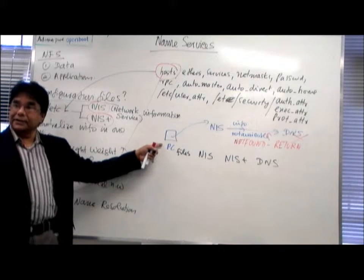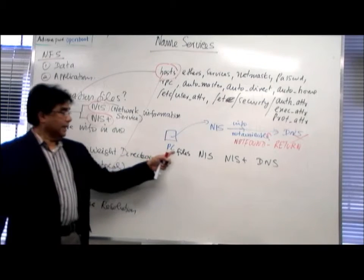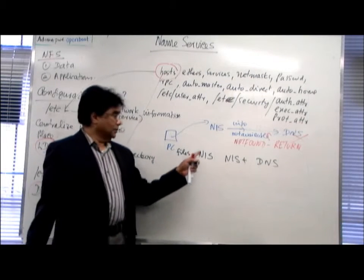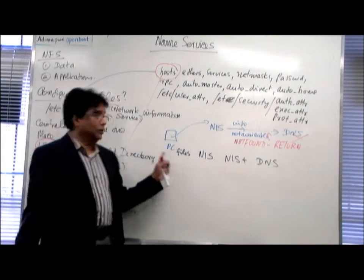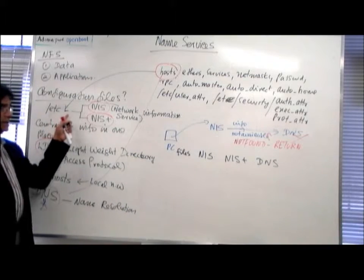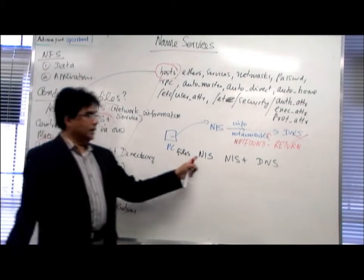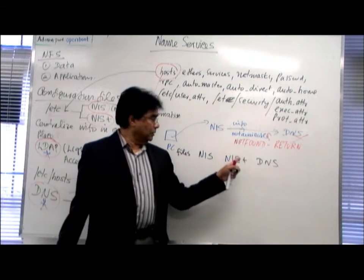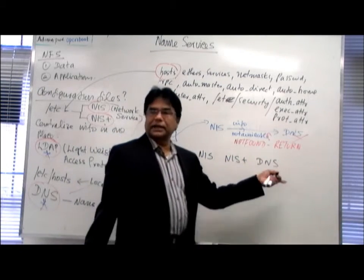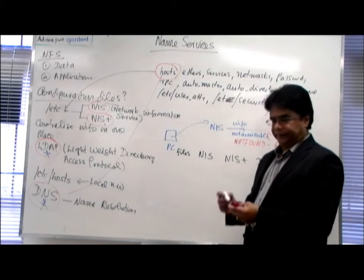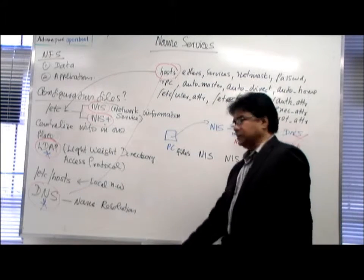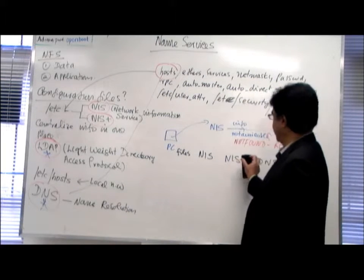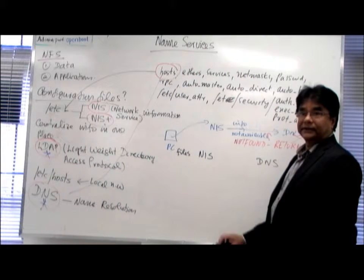So I can tell this machine: if the information is not in the local ETC files, then go to NIS. If it is not there, go to NIS plus. If not there, go to DNS. There is no reason to use these two at the same time.